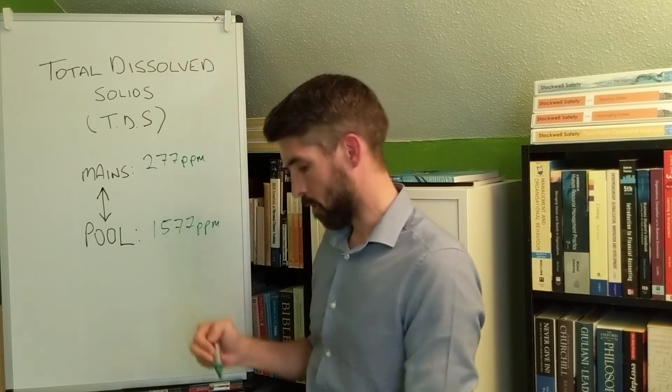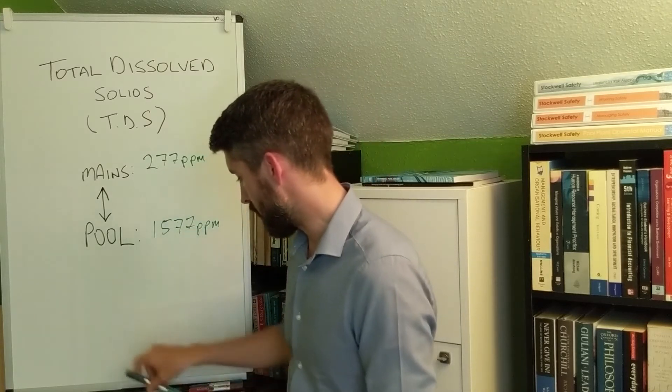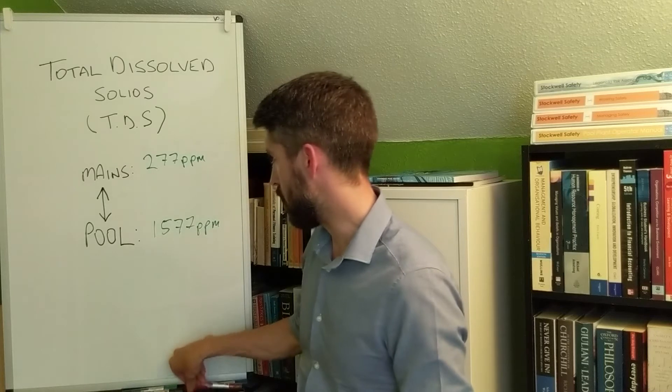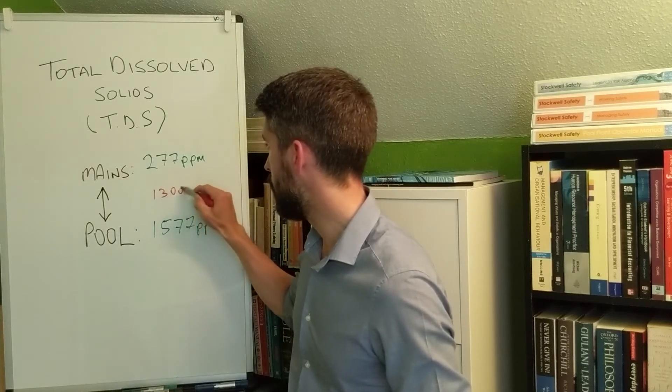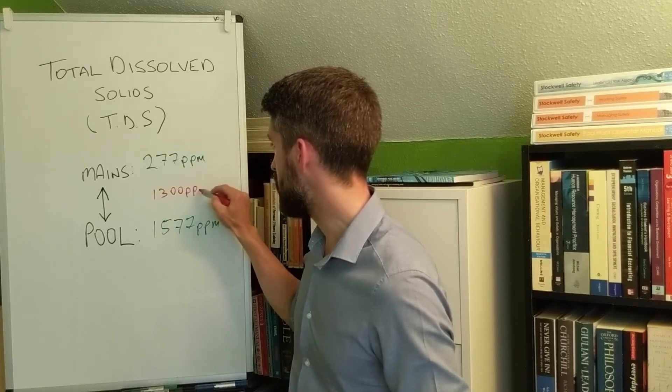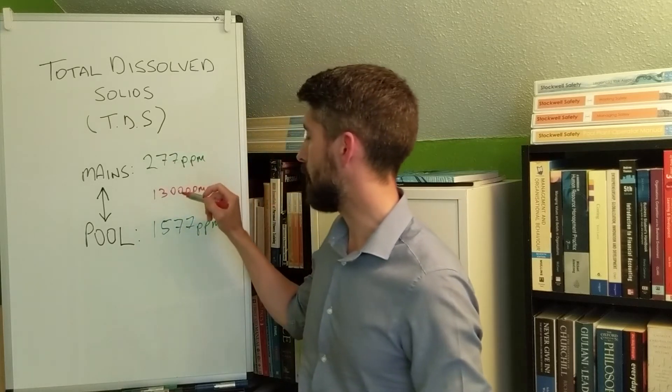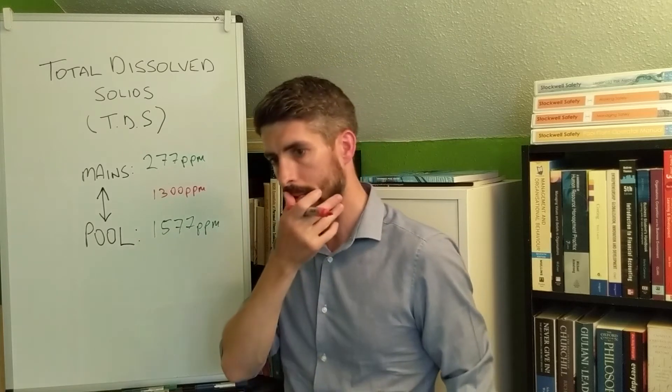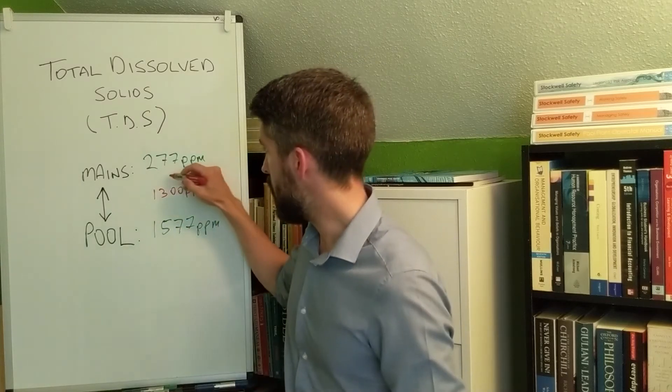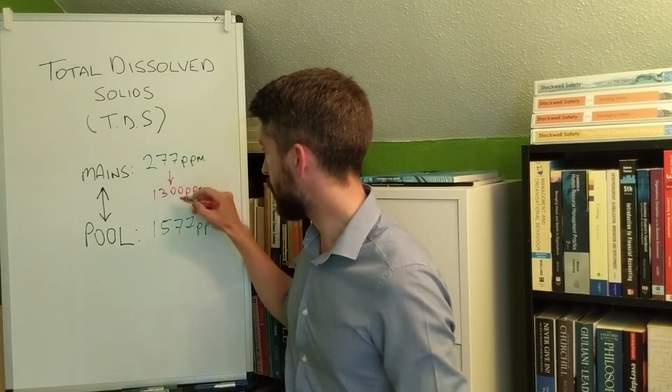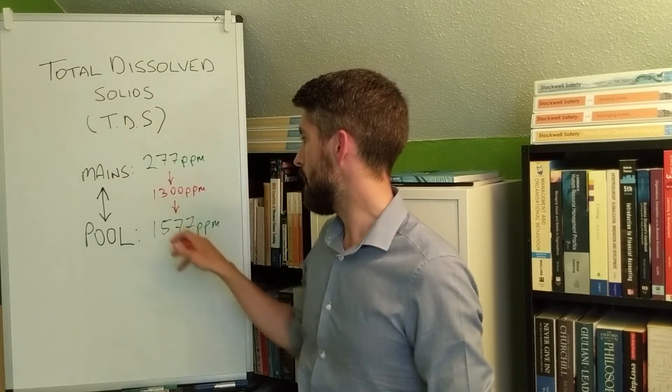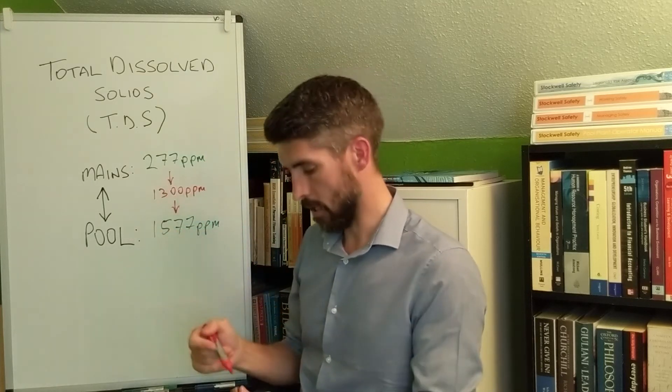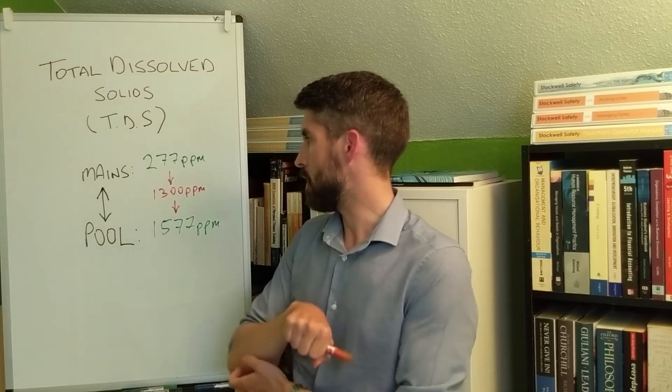What you'd be able to work out is that there's a difference of 1300 parts per million. So 277 came in from the mains that went into the pool initially, and then on top of that another 1300 went in to make it up to 1577.